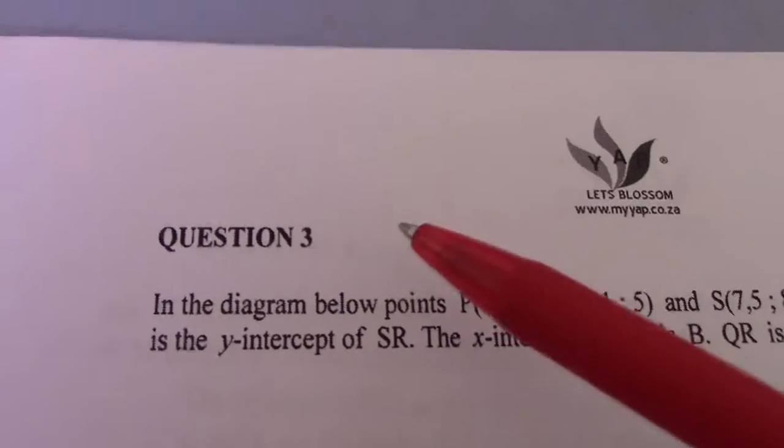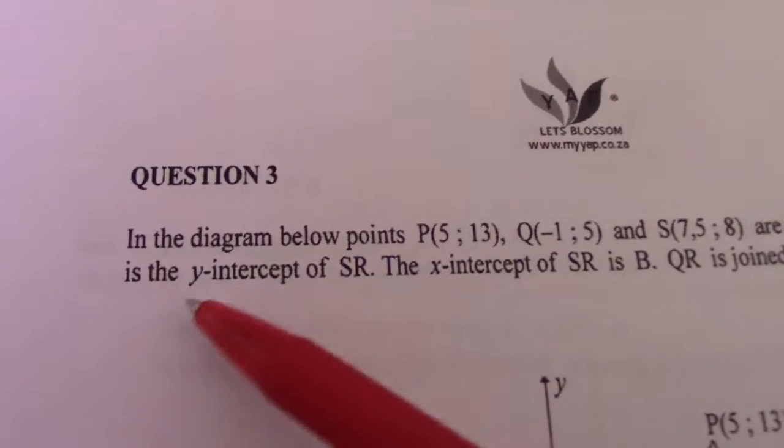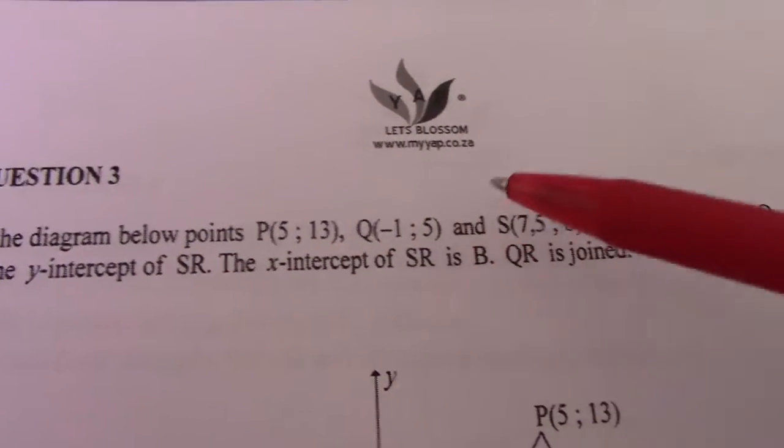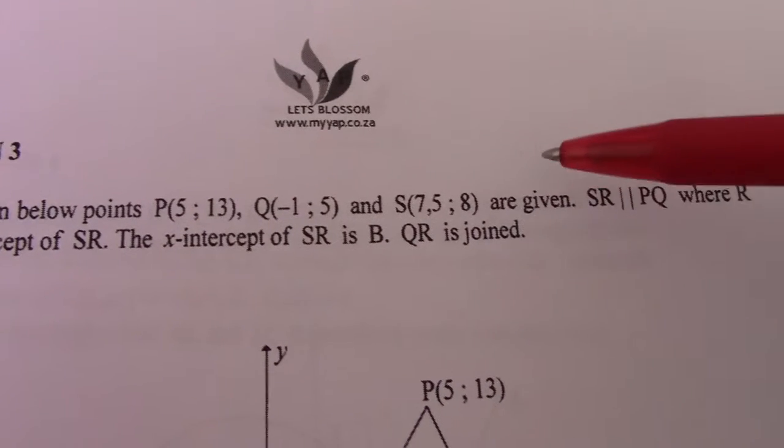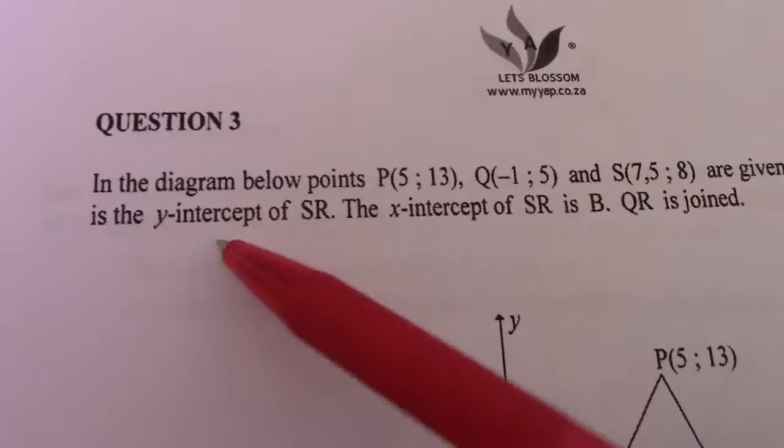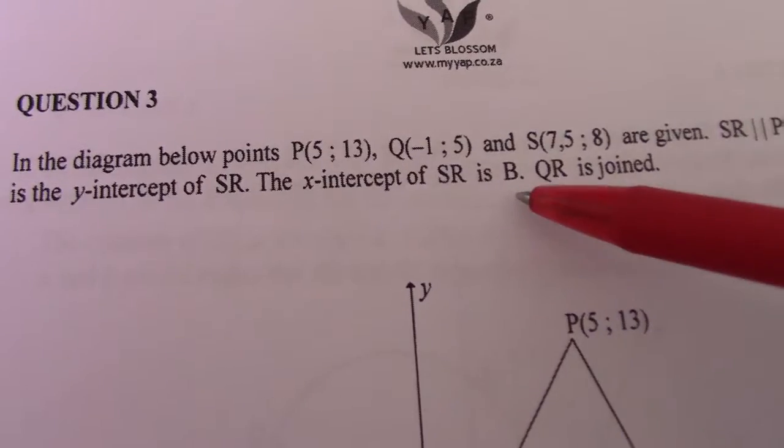Good day and welcome to February 2015 analytical geometry question 3. In the diagram below, points P(5,13), Q(-1,5), and S(7,5,8) are given. SR is parallel to PQ, where R is the y-intercept of SR. The x-intercept of SR is B, and QR is joined.